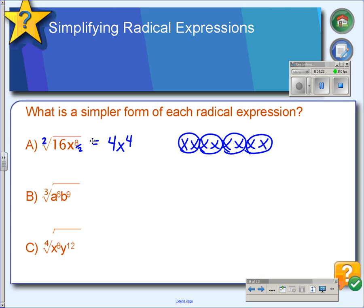So for example B, we have a to the 6th. If you take 6 and divide it by 3, you get 2. So this will be a squared. Take 9 divided by 3, you get 3, so we get b cubed. And then for part C, doing the same thing, 8 divided by 4 is 2, and 12 divided by 4 is 3.